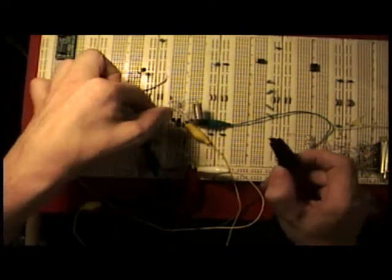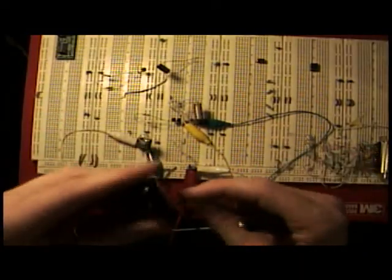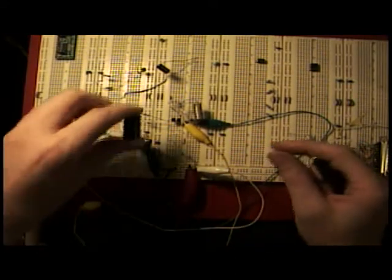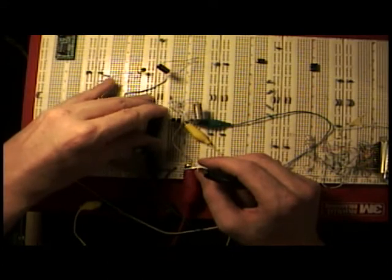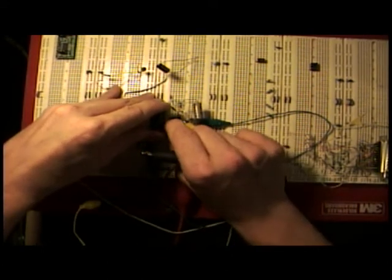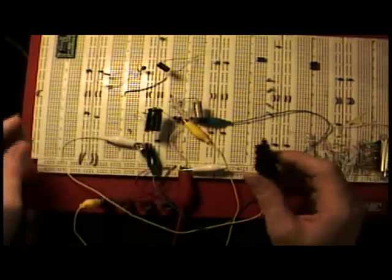And I'd like to also show by just changing one of the components here, the capacitor, which you could also change the resistors to, you can change the time constant that it takes for the LED to turn on and off.